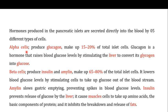The first type are the alpha cells, which produce glucagon and occupy about 15 to 20 percent of the total islet cells. Glucagon raises the blood glucose level by stimulating the liver to convert its glycogen into glucose. During fasting, when blood glucose drops, glucagon directs the liver to convert stored glycogen into glucose, which can be used as an energy source when food is not readily available.